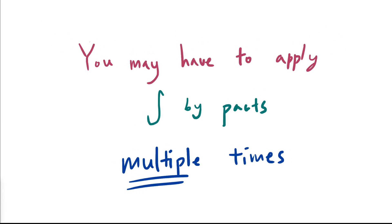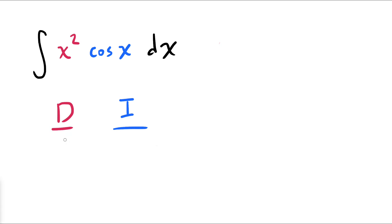Now to give one tip, you may have to apply integration by parts multiple times. For example, say you want to integrate x squared cosine of x by differentiating x squared and integrating cosine of x.